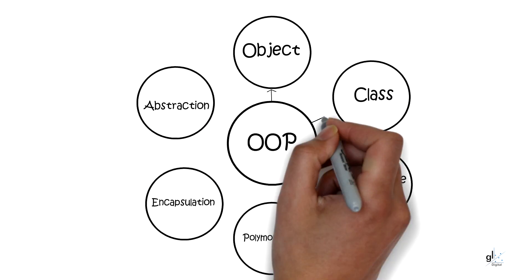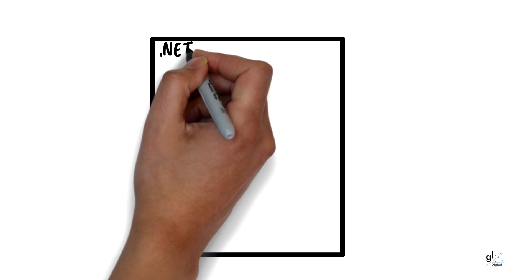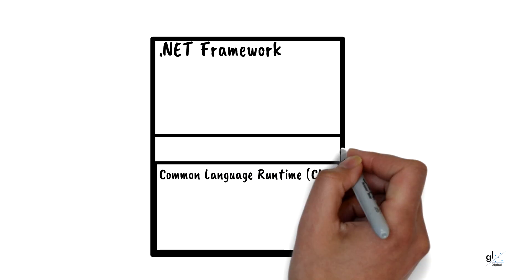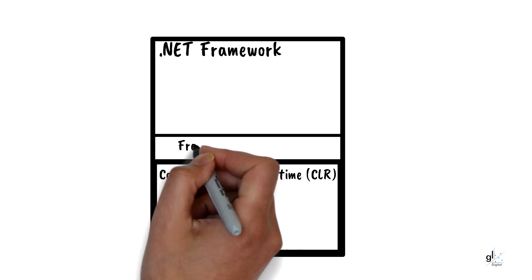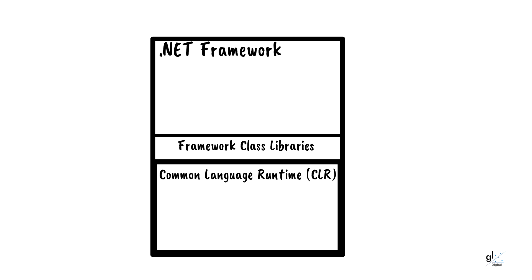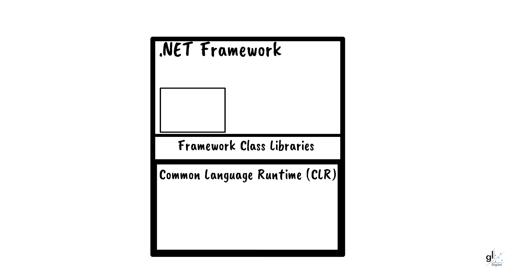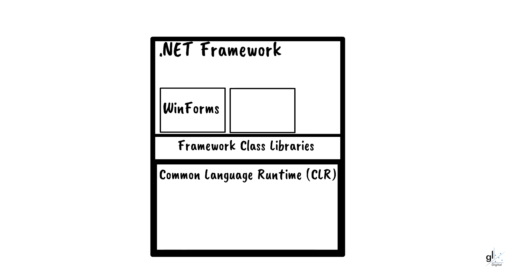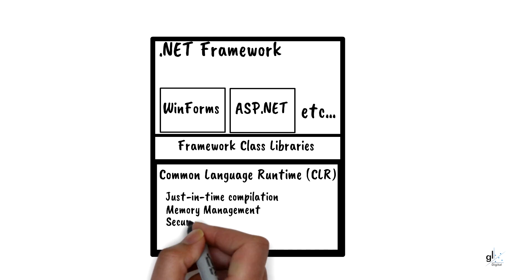The first version of .NET was named .NET Framework. Programs written in .NET Framework executed in a software environment, in contrast to a hardware environment. This software environment is named the Common Language Runtime. A number of class libraries, called the Framework Class Libraries, are built into .NET Framework and are available to be consumed by .NET applications. .NET applications run in the Common Language Runtime (CLR), which provides services like just-in-time compilation, memory management, security, and exception handling.